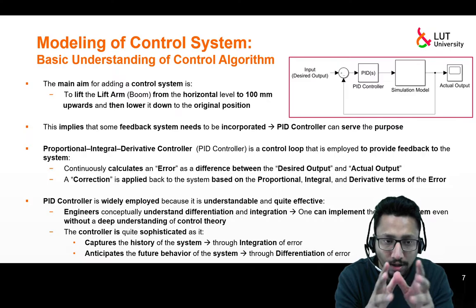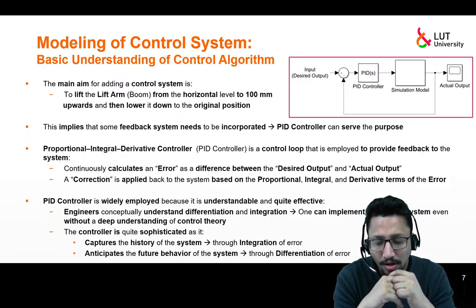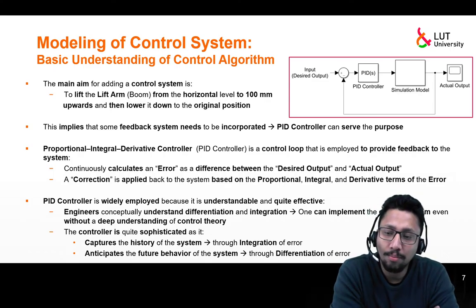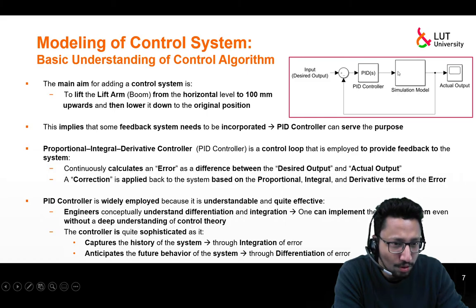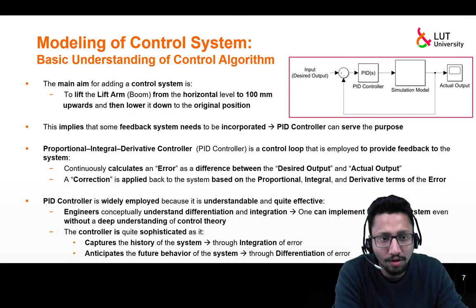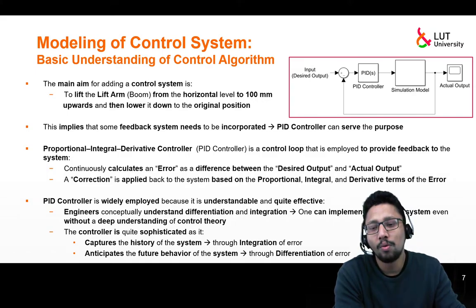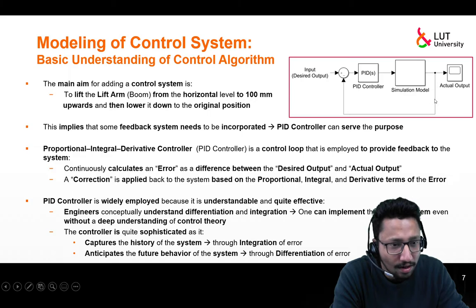This implies that we need some kind of feedback system incorporated into our system, and a PID controller can serve that purpose. A PID controller — a Proportional Integral Derivative controller — is a control loop employed to provide feedback to the system. We provide some input to the simulation model; the output is fed back as input to the PID controller, and the PID controller then provides a corrected set of inputs to the simulation model.